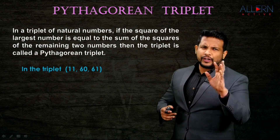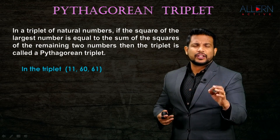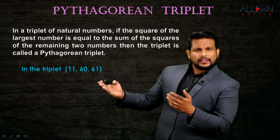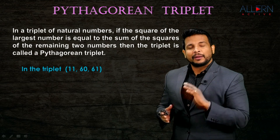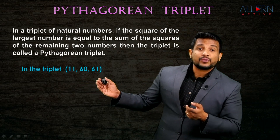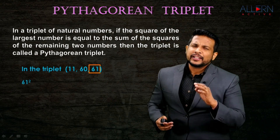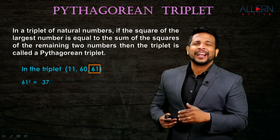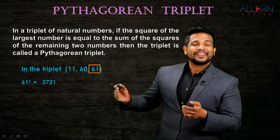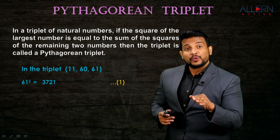Let's understand with an example. The triplet is 11, 60, 61. We need to check whether this is a Pythagorean triplet. We pick up the largest number - 61. Take the square of that: 61 × 61 = 3721. Let's call that result number one.